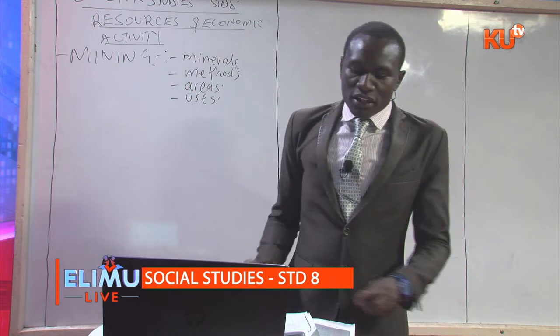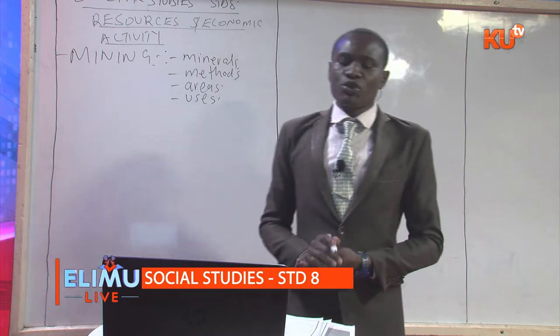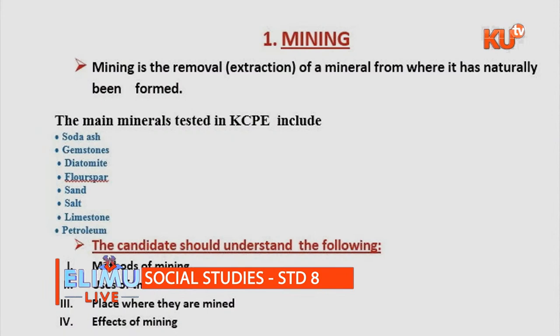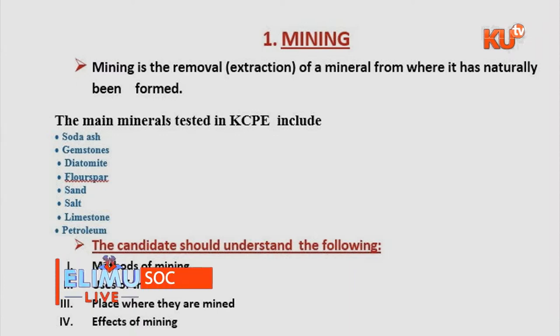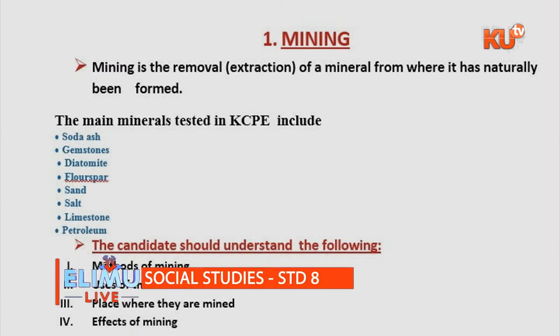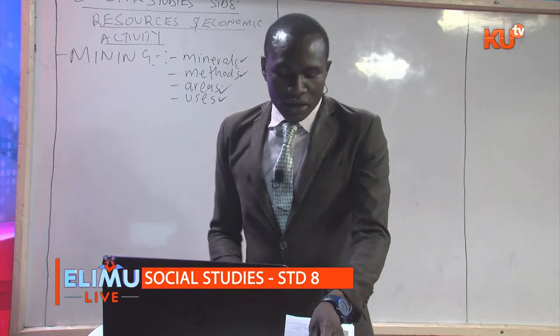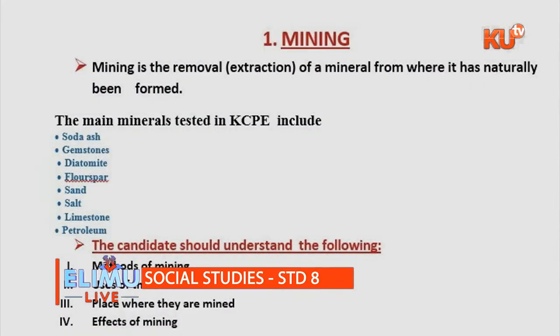The most commonly examined minerals are: soda ash, gemstone, diatomite, flosper, sand, salt, limestone, and petroleum. In this topic, the candidate must be able to know the mineral, where it is mined, the area where it is located, and its uses. As you can see on the screen, there is a summary of these minerals. Flosper, for example, is mined through open-cast mining and it is mined in Kimwarer. Limestone is also mined through open-cast.